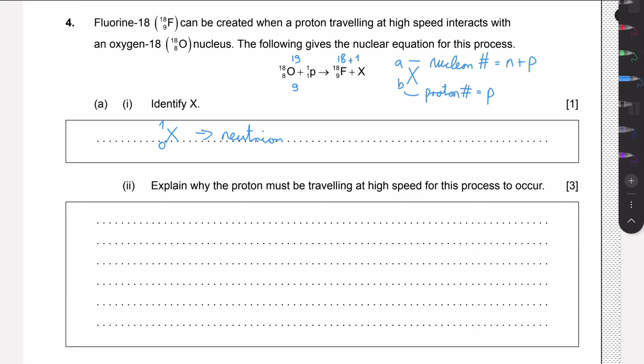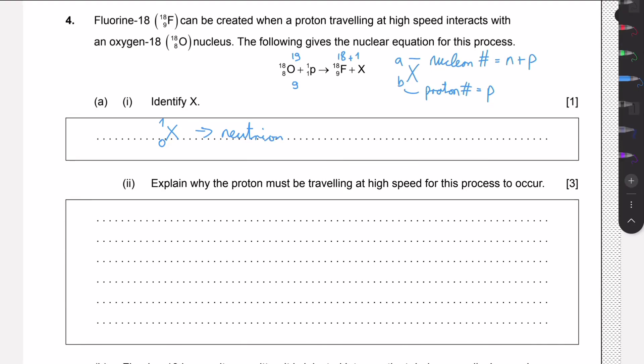The second part wants us to explain why the proton must be traveling at a high speed for this process to occur. First of all, it's important to notice that for these types of reactions, we need the strong nuclear force. It's important that this force has a very short range, so for this force to work, the atoms have to be really close to each other.